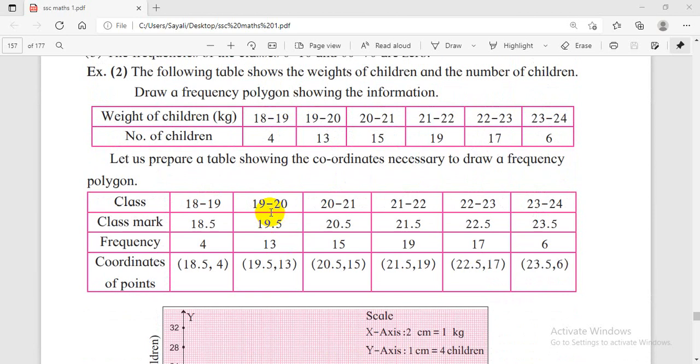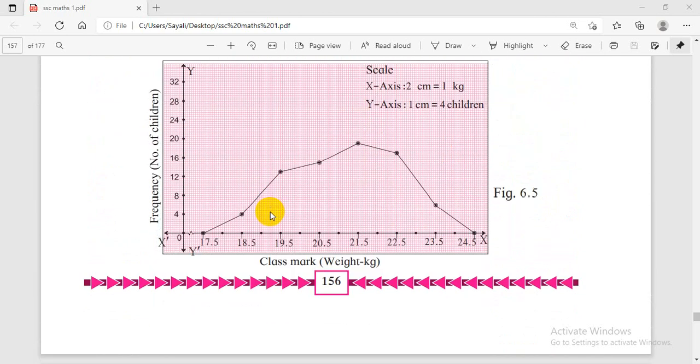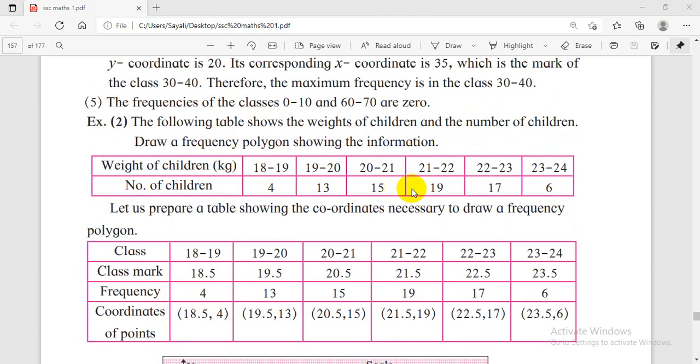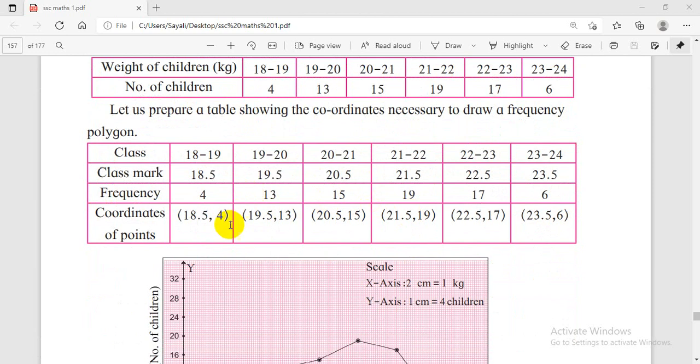The frequency polygon requires two approaches: without histogram and with histogram. Without histogram, the intervals 18 to 19, 19 to 20 are already continuous.